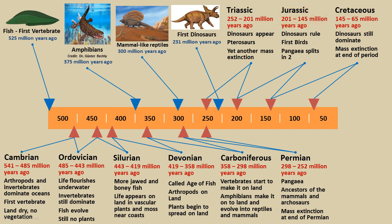The Jurassic time period occurred between 201 and 145 million years ago. We also see the first birds appear in the archaeological record, and Pangaea splits into two massive continents. The final period of the Mesozoic is the Cretaceous, occurring between 145 and 65 million years ago. Dinosaurs still dominate the Earth, and then there is that mass extinction event at the end of the period which wipes out the dinosaurs — except for the birds. We are going to use these time periods as the framework for the entire series.